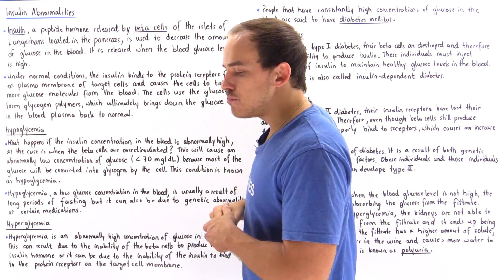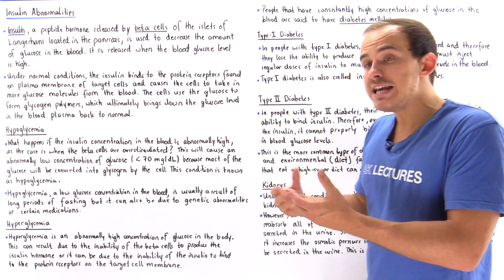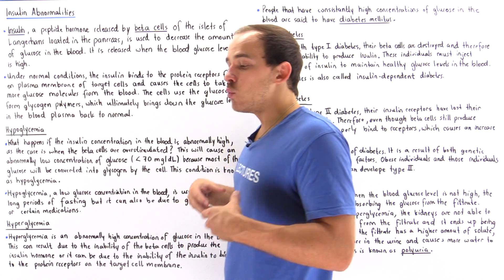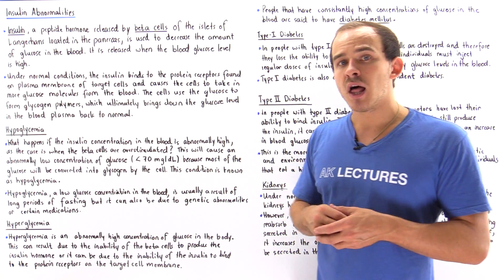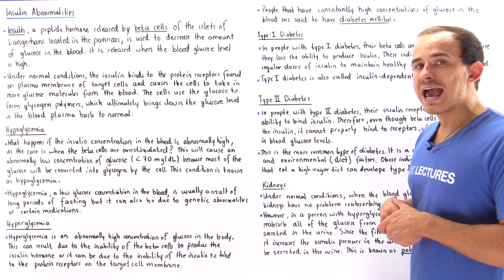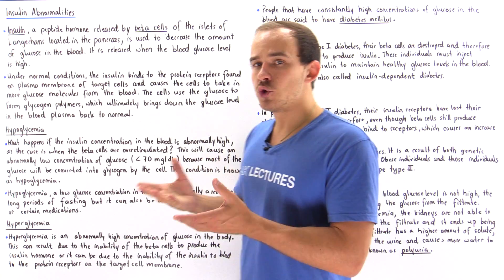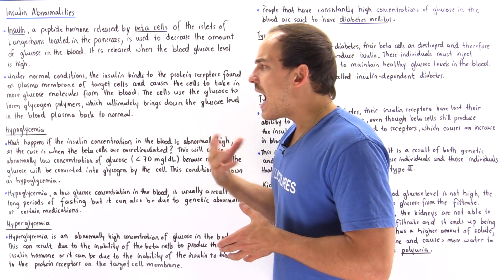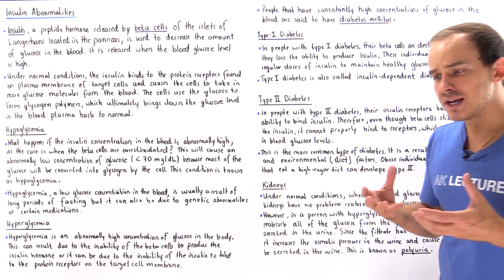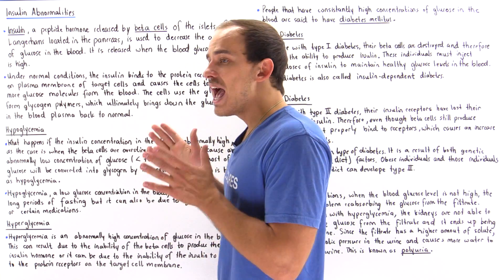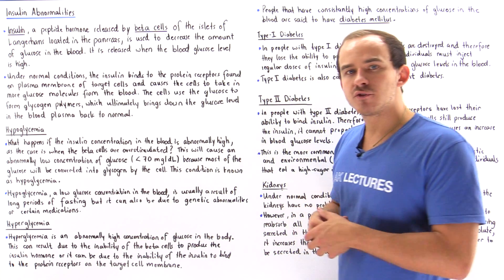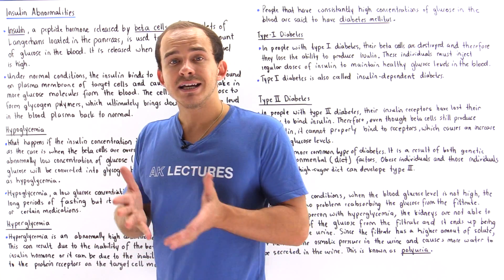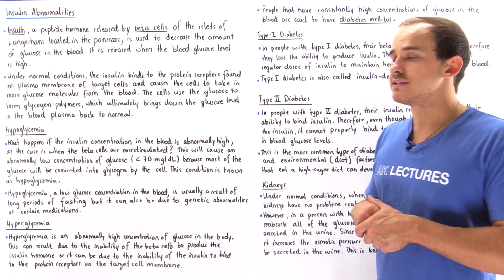Another cause of hypoglycemia is fasting — not eating for a very long period of time. If we don't eat for a long time, the cells of our body use up the majority of glucose in our blood to produce ATP, lowering glucose concentration and leading to hypoglycemia. This can be very dangerous because our brain uses glucose as its main energy source, and a lack of glucose can damage brain cells.